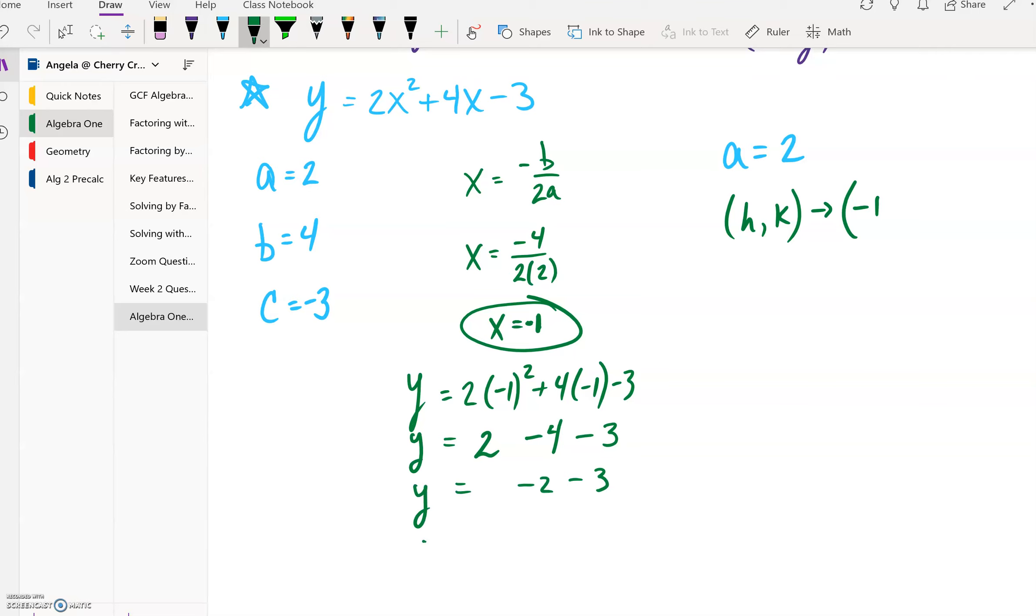And minus 3, so 2 - 4 is -2, minus 3 more is going to be our y value. So we get a y value of -5, and that is going to be the y value of our vertex.